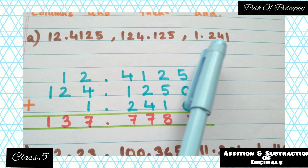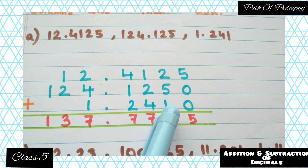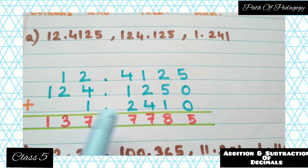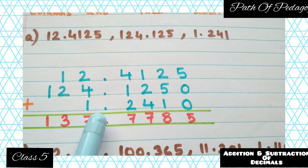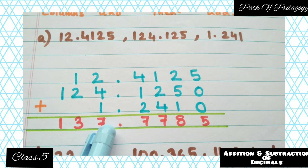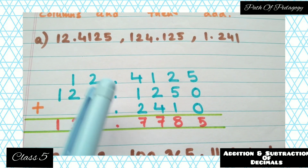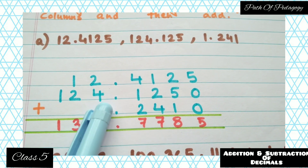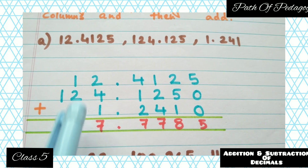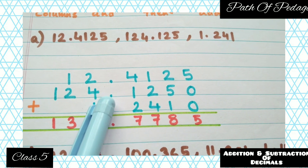Next is 1.241 — just write it down. Again this decimal has three numbers after the decimal point, so you have to add one zero to the extreme right. Remember: the decimal points should be aligned one after another — the decimal point should not be placed here and there. Right after the first decimal point you have to place the next one, and so on.